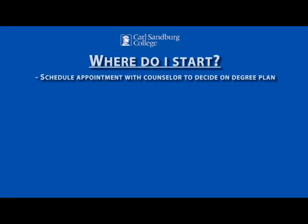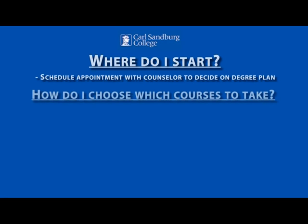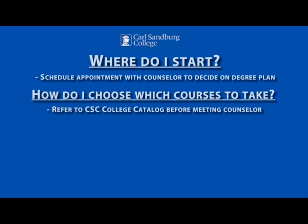Once you decide what program to pursue, how do you know what courses to enroll in? You can refer to the CSE College Catalog before meeting with your counselor to make course selections. The catalog will show you which courses are needed to complete your degree or certificate. Hard copies of the catalog are available in the admissions office or you can view it online at the CSE website.